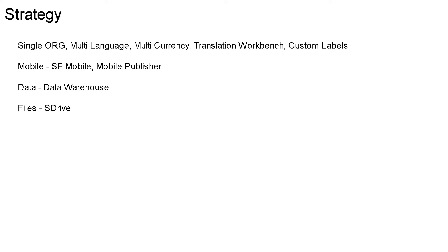For mobile, I recommend going with Salesforce Mobile for internal users and Mobile Publisher for customers, because there is a need for separate branding and customers would be using Mobile Publisher. For data archiving, I recommend going with a data warehouse using Astra, because there is a large volume of files that needs to be accommodated which the Salesforce platform will not be able to handle.